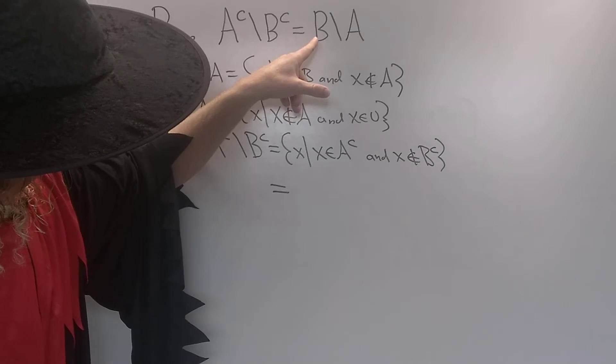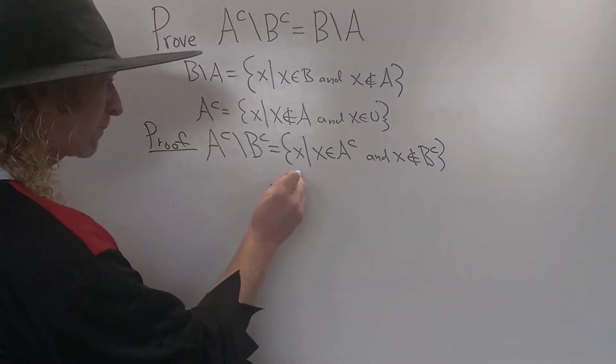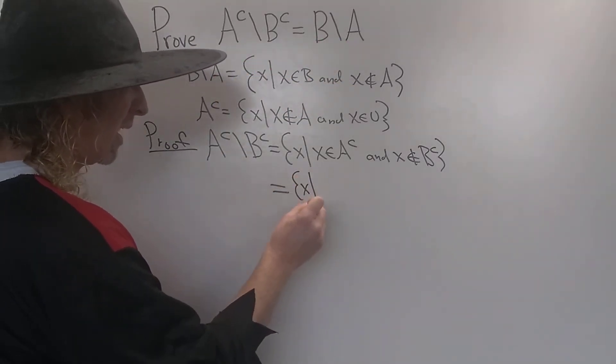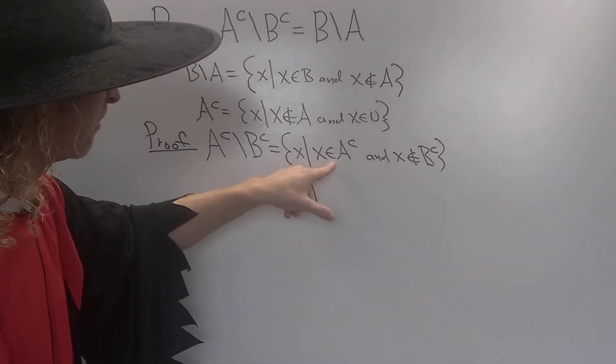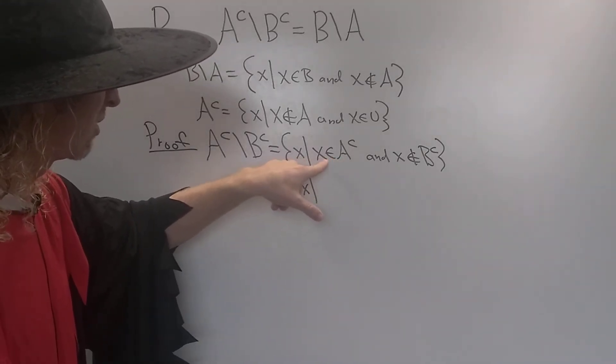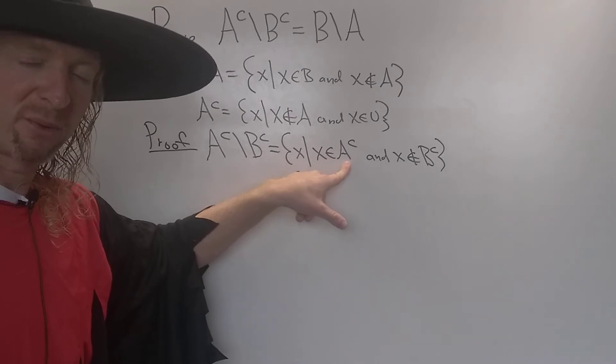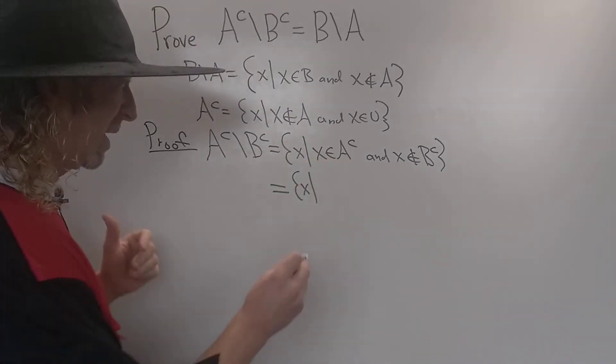All right, where are we trying to go? We're trying to show that X is in B, but it's not in A. So let's go ahead and write this down again. And maybe we can write this down another way. So X is in A complement.